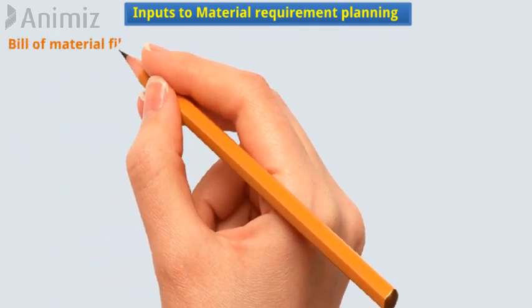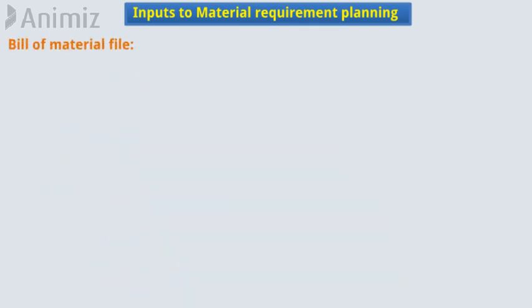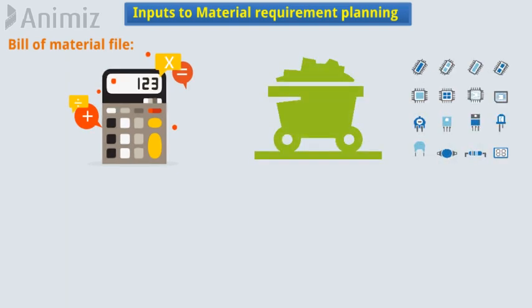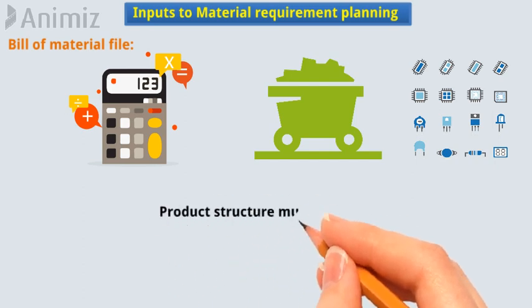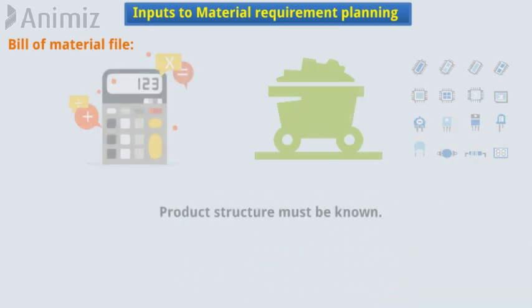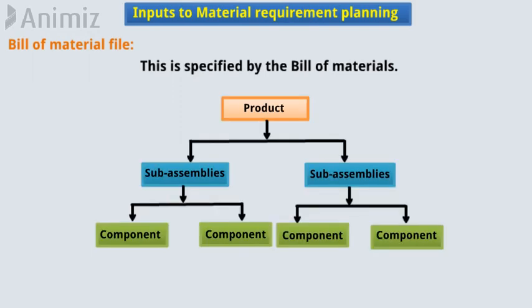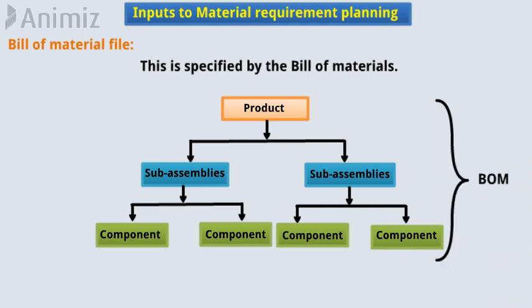Bill of material file: In order to compute the raw material and components required for the end product listed in the master production schedule, the product structure must be known. This is specified by the bill of materials, which is a list of component parts and sub-assemblies that make up each product. Putting all these assemblies together, we have the bill of materials file or BOM.